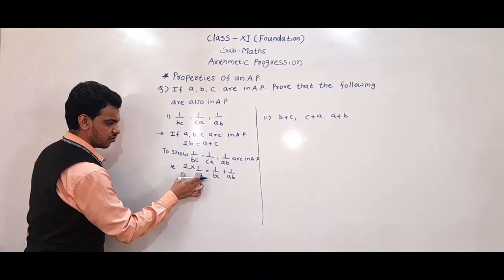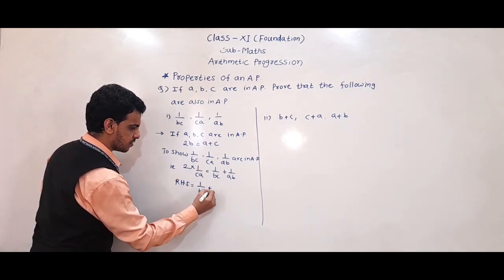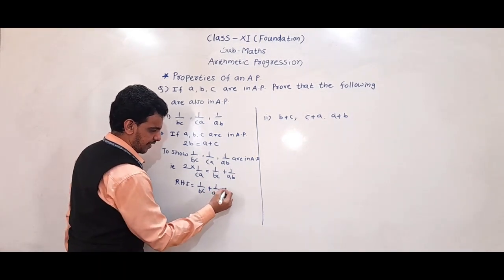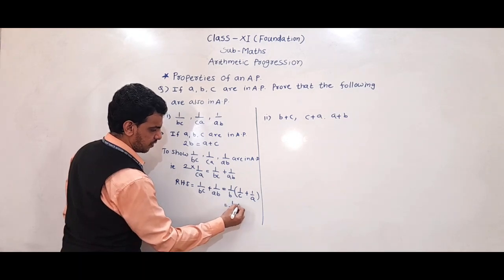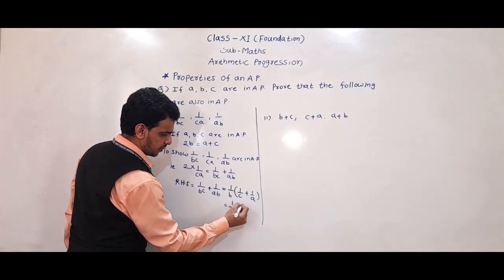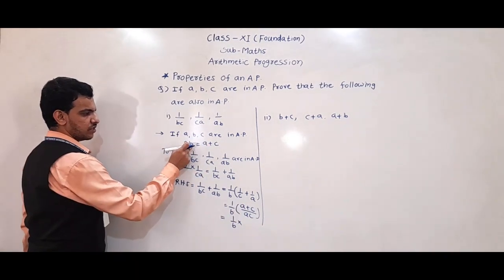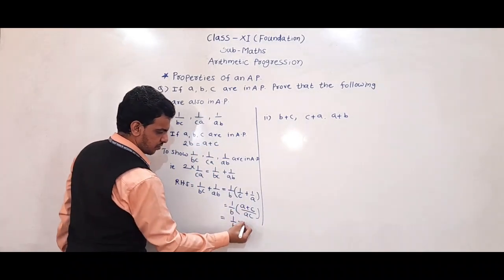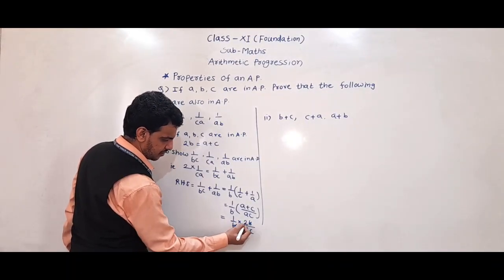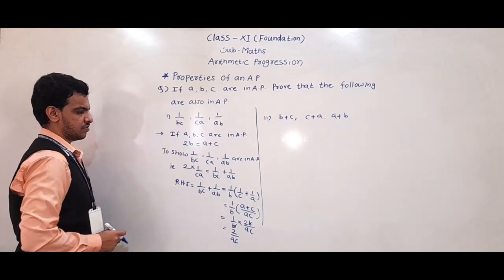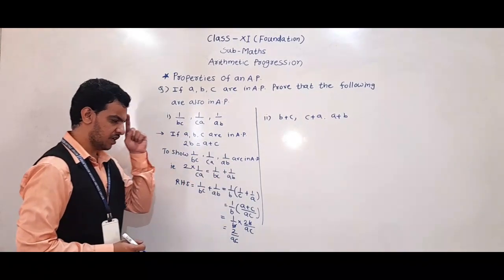Taking RHS: 1/BC + 1/AB = (1/B)(1/C + 1/A) = (1/B)×(A + C)/AC. Since A + C = 2B, this becomes (1/B)×(2B/AC) = 2/AC = LHS. So LHS = RHS, and 1/BC, 1/CA, 1/AB are in AP.